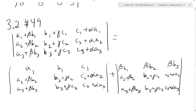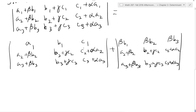We want to eventually get the matrix with columns A, B, C in clean form with the betas, gammas, and alphas separated out. I'm going to make a video for this one since it's going to take a lot of class time to write it all out cleanly.